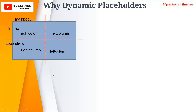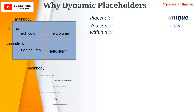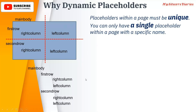Now there is a problem. Till now, whatever we have seen is that a placeholder should have a unique key — you can only have a single placeholder with the same name. So you can't have two placeholders both called 'right column' or 'left column'. As an author, you can't design this kind of structure because you can't give two placeholders the same name.